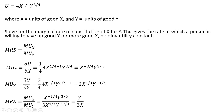Putting everything together, X to the minus three-fourths moves into the denominator leaving just X, and Y to the minus one-fourth moves into the numerator giving Y to the three-fourths times Y to the one-fourth, or just Y. So the marginal rate of substitution is Y over X. Unlike our first example with a linear utility function for perfect substitutes, the marginal rate of substitution for a Cobb-Douglas utility function will change depending on where we are along its indifference curve.